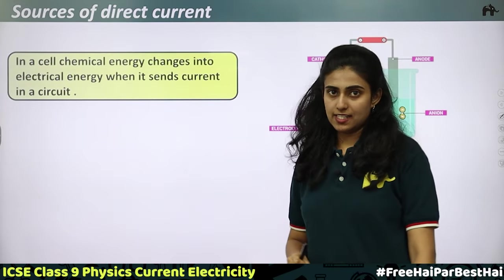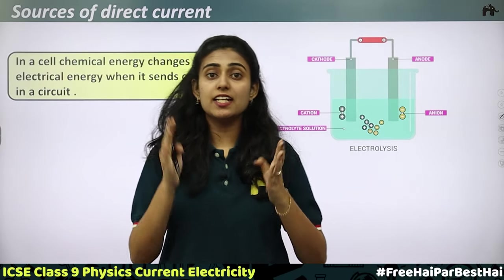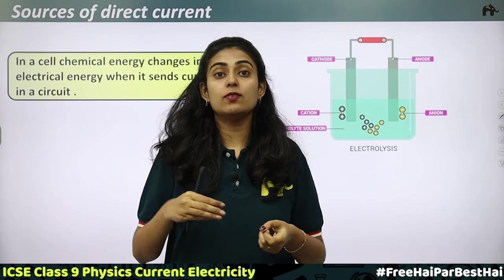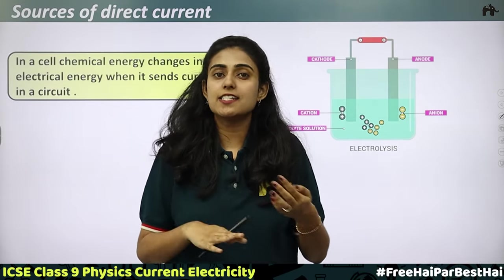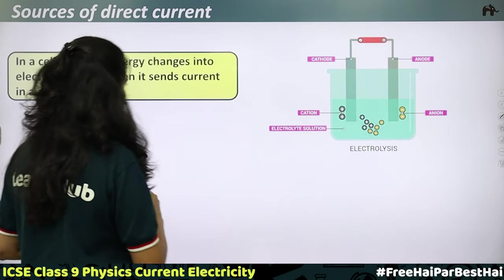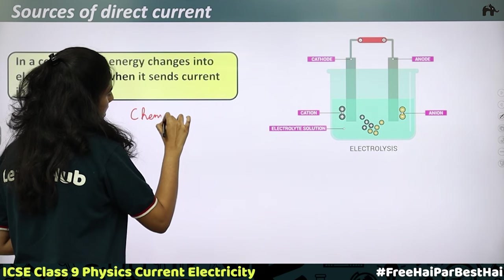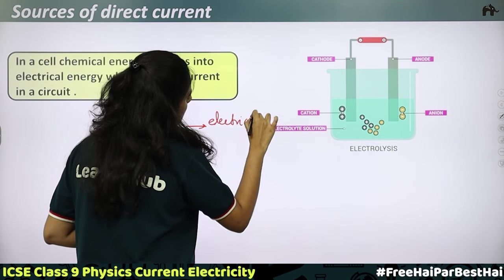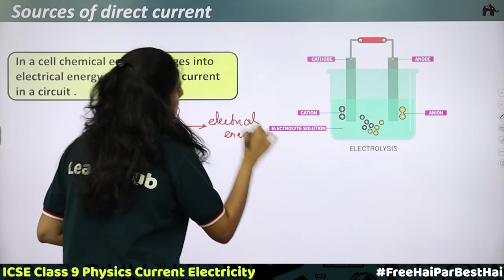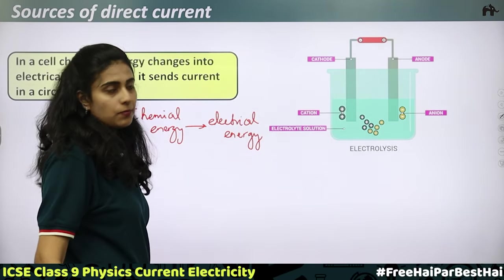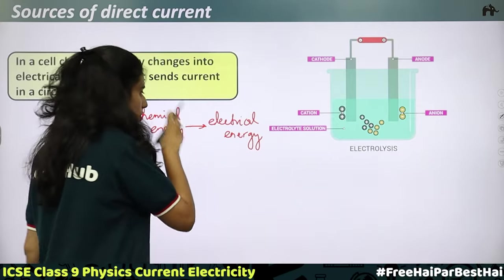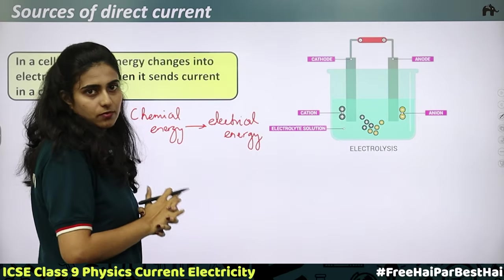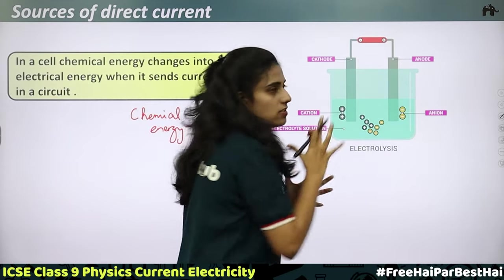Inside a cell, chemical energy is getting converted into electrical energy. This electrical energy is used to light up a bulb inside a torch or power a remote. The stored chemical energy, when it gets over, means the battery is getting discharged and it cannot produce electricity anymore.